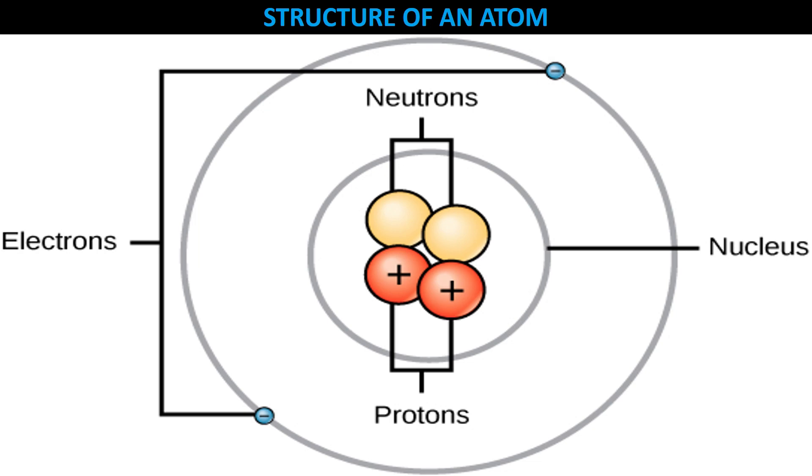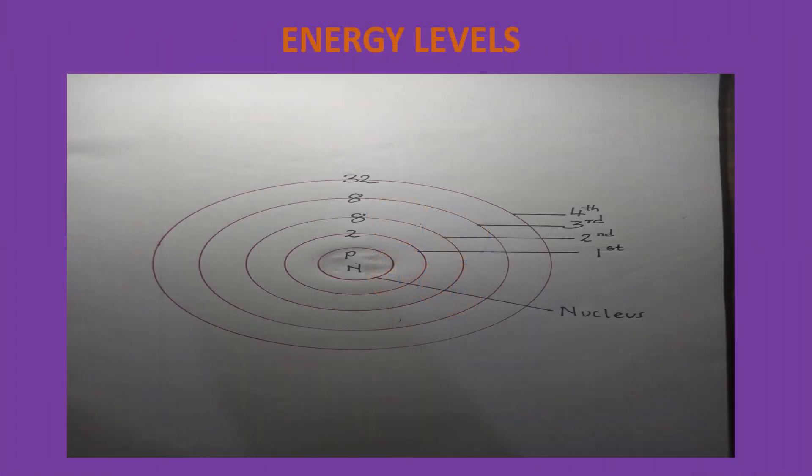The protons and neutrons make up the nucleus of the atom, which is surrounded by the electrons belonging to the atom. The atomic number of an element describes the total number of protons in its nucleus.